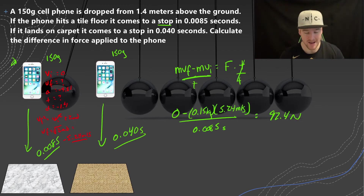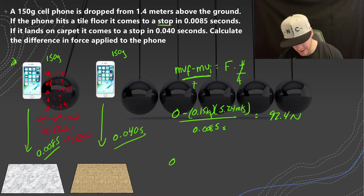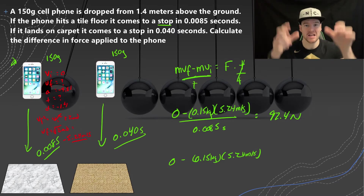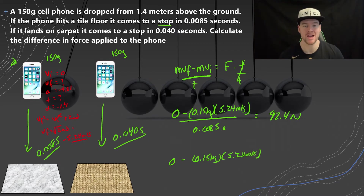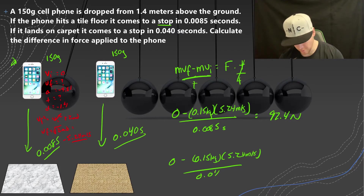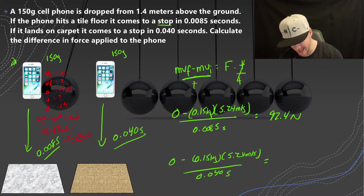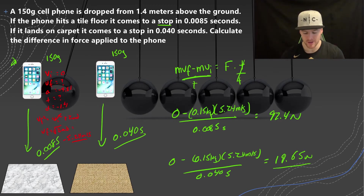Now for the phone landing on carpet: the calculation is similar — 0 minus 0.15 kilograms times 5.24 meters per second — the change in momentum is exactly the same. They both hit the floor at the same speed, same mass, both come to a stop. But the time is now 0.040 seconds. That gives 19.65 Newtons — significantly less, at least four times smaller than the original force. That's going to significantly reduce the damage to the phone.